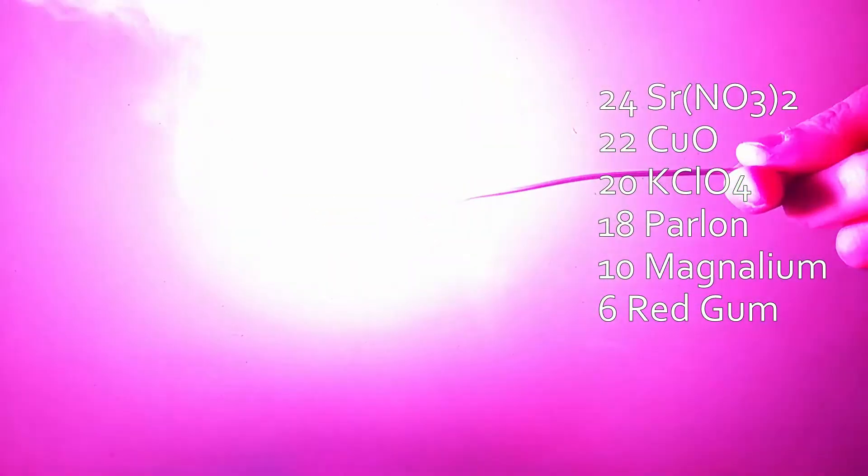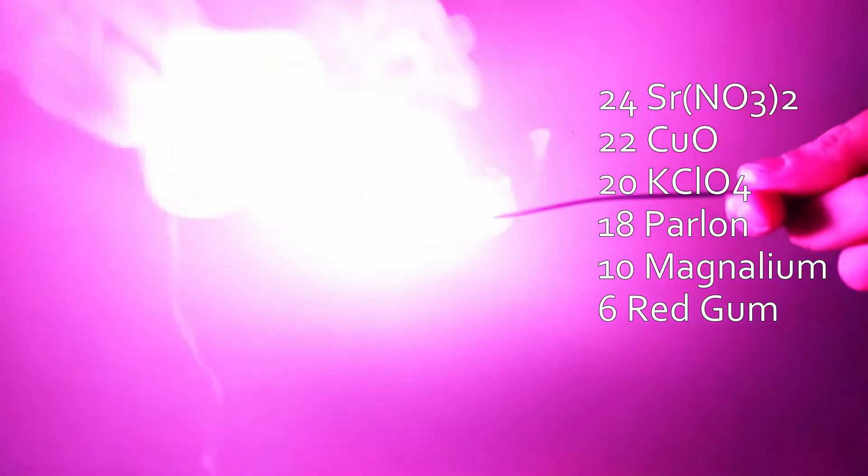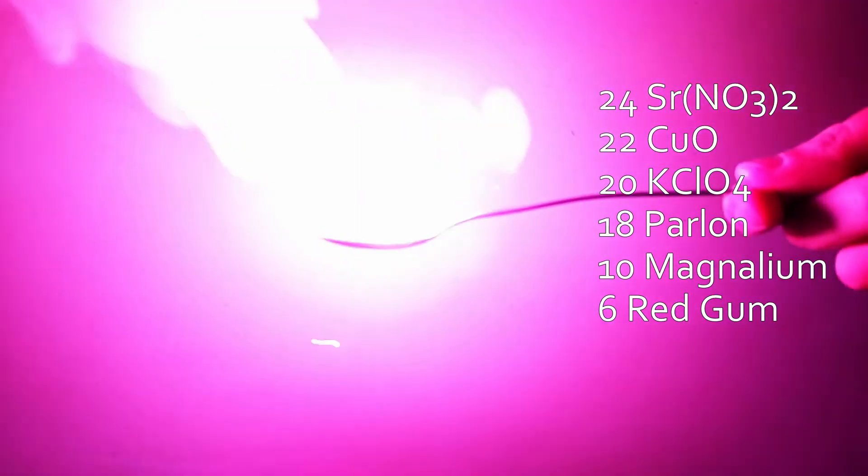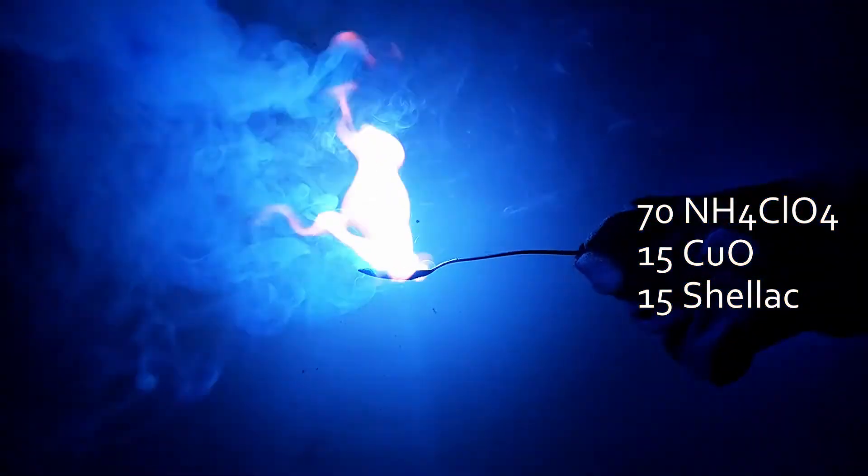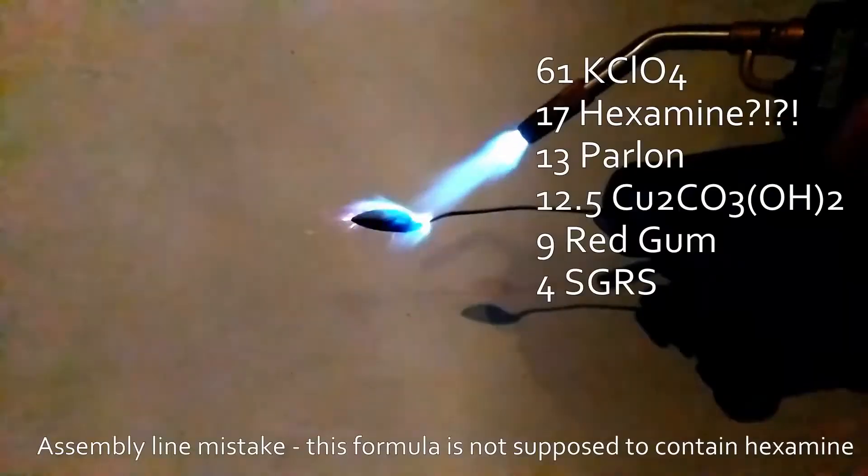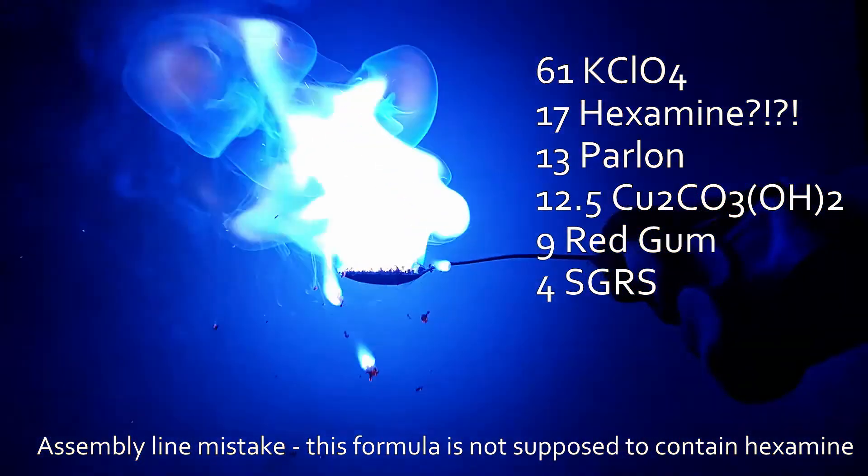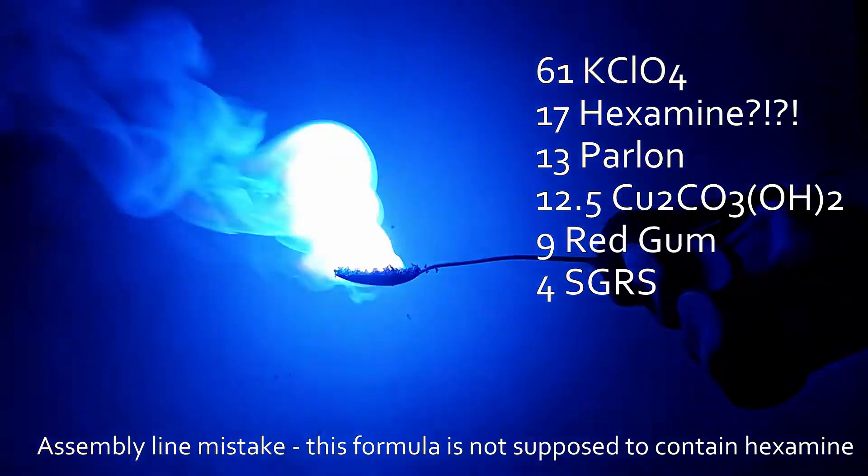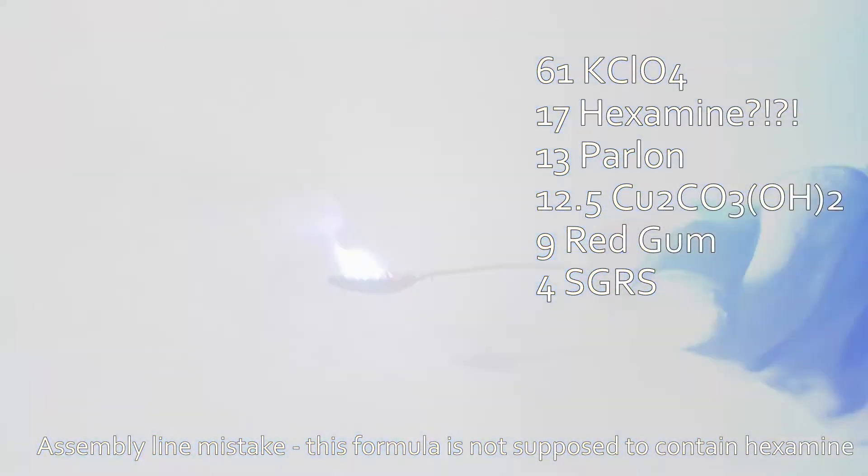That said, cupric oxide and metallic fuels can work when the goal is a color like teal or purple, and we've covered these combinations in previous videos. For pure blues, cupric oxide is best paired with organic fuels such as shellac, red gum, sulfur, or even lactose to help keep flame temperatures low. The requirement of a lower flame temperature is also a selling point for copper carbonate because, as we've discussed before, carbonates tend to lower flame temperatures in general.